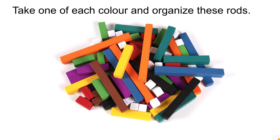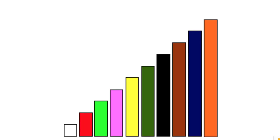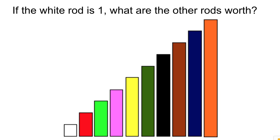The first thing I'd like you to do is take one of each color of the relational rods and organize them in a way that makes sense to you. Pause the video before you move forward to see the answer. Now there are many ways to arrange these rods. The way that we're going to focus on is by arranging them in order of size. Once we have them arranged in order of size, if I tell you that the white rod is worth one, what are all the other rods worth? Take a second and pause the video to come up with your answer.